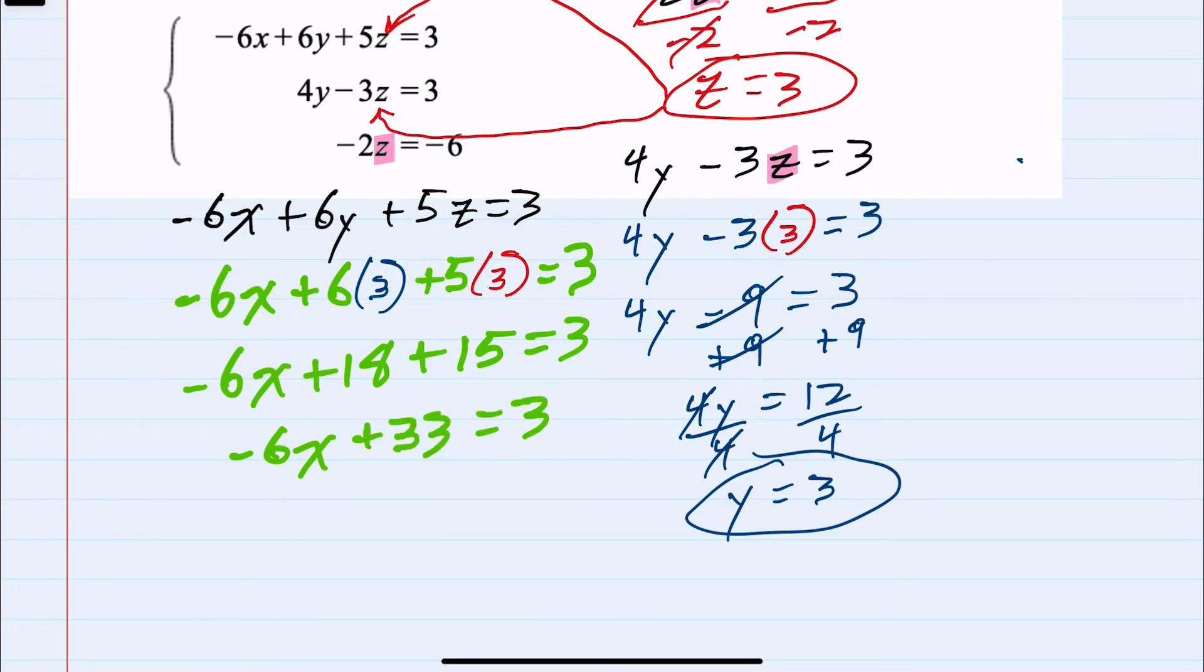Isolating the x, I would want to subtract the 33 over to the other side. Canceling on the left, negative 6x equals 3 minus 33 would be a negative 30.